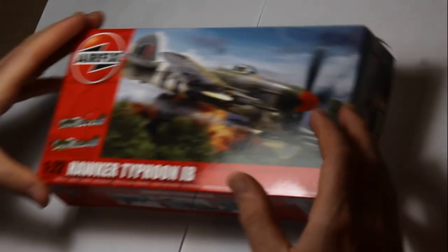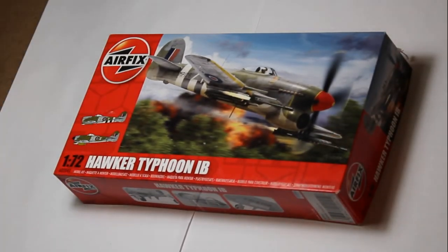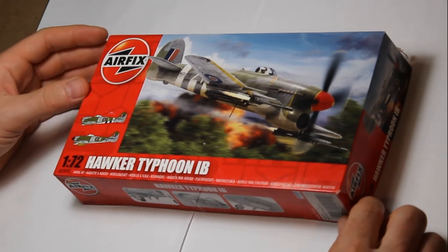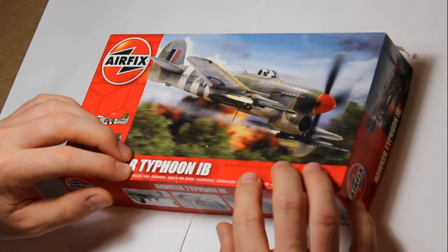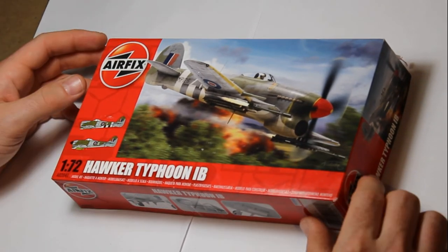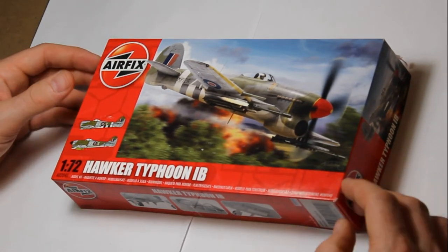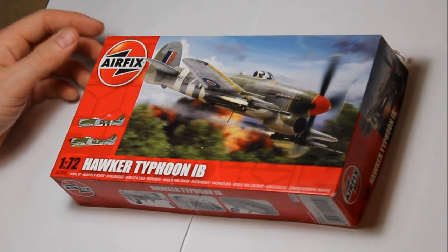So that is the Airfix Hawker Typhoon 1B in 1:72nd scale from Airfix. Part number A02041. A very nice kit. Highly recommended. Easily found. Very cheap in the UK. And a cracking kit. Why not give it a go.